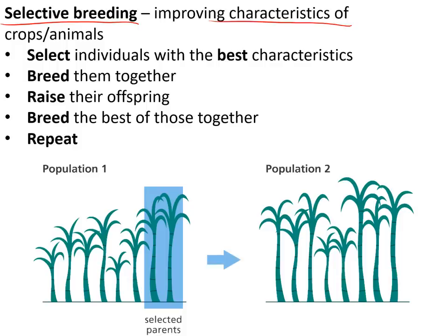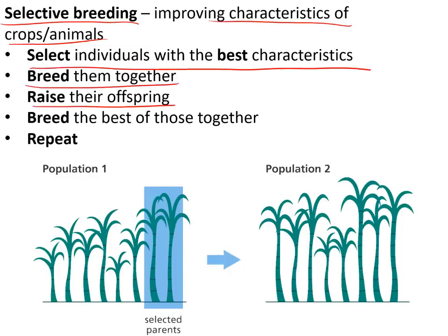Selective breeding is what farmers do to improve the characteristics of their crops or animals. It works by selecting individuals with the best characteristics and breeding them together, then selecting the best offspring and breeding those, and repeating the process for many generations until you end up with a totally changed population.